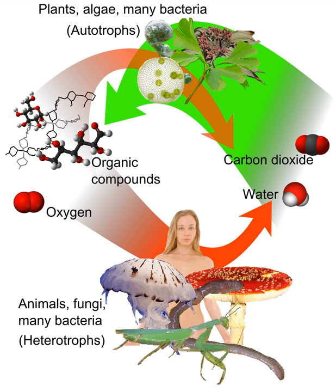Autotrophs are fundamental to the food chains of all ecosystems in the world. They take energy from the environment in the form of sunlight or inorganic chemicals and use it to create energy-rich molecules such as carbohydrates. This mechanism is called primary production. Other organisms, called heterotrophs, take in autotrophs as food to carry out functions necessary for their life.